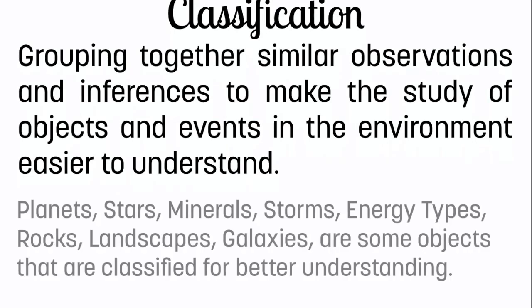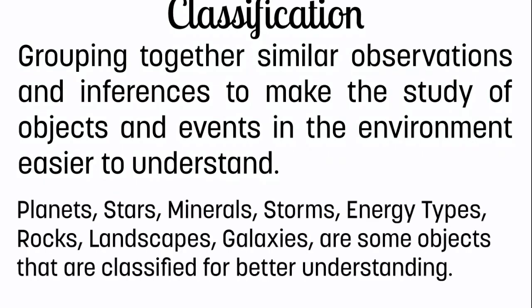In Earth Science, there's a couple examples that we will look at, like planets and stars and minerals and storms and energy types and rocks and landscapes and galaxies. They're all classified into different groups. There are different groups of planets, there are different types of stars, there are different types of galaxies. That's to make studying them much easier because we have similarities amongst those groups.